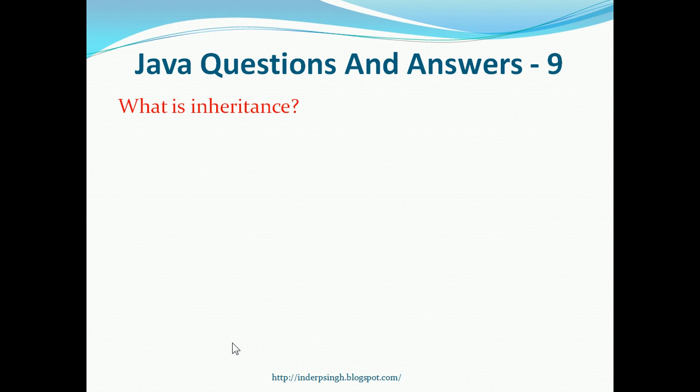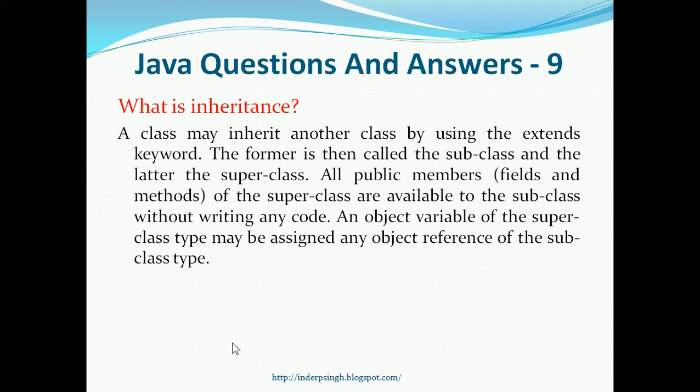Question 9. What is inheritance? A class may inherit another class by using the extends keyword. The former, that means the inheriting class, is called the subclass, and the inherited class is called the superclass. All public members, that means fields and methods of the superclass, are available to the subclass without writing any code. An object variable of the superclass type may be assigned any object reference of the subclass type.